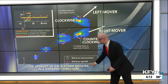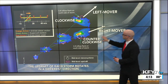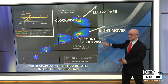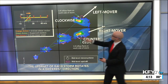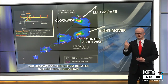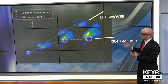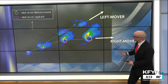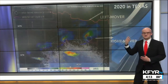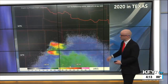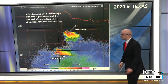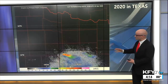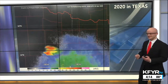The updraft of each storm that splits moves in a different direction. The right mover — going to the right of the initial thunderstorm movement — spins counterclockwise, which is more normal for supercell thunderstorms. The left mover goes in a clockwise rotation, which is a little abnormal. Usually the right mover becomes the dominant storm and the left mover dies out. Here's a good example from Texas where both cells were actually quite strong after splitting, with counterclockwise rotation in one and clockwise in the other.